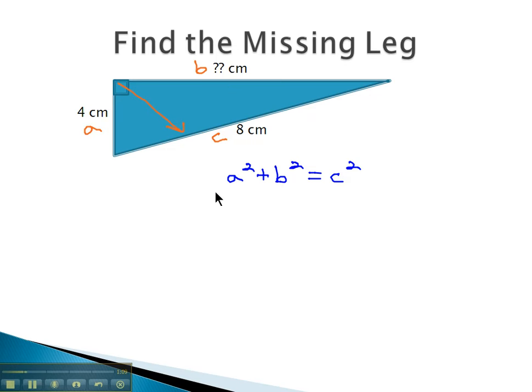When we replace a, a is 4 centimeters squared, plus b, b we don't know, squared, equals c, c is the 8 centimeters squared. Then we can start solving for b by simplifying first, and then isolating the squared variable. When we simplify, we can do these exponents on both sides of the equation. 4 squared is 16 square centimeters, plus b squared equals 8 squared is 64 square centimeters.